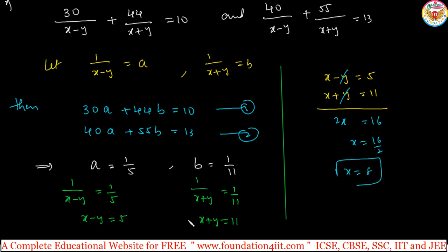One of the equations substitute, either here or here. x plus y is 11, so 8 plus y is 11, then y equals 11 minus 8 is 3. x is 8 and y is 3, we get the answer directly. This is the main step.